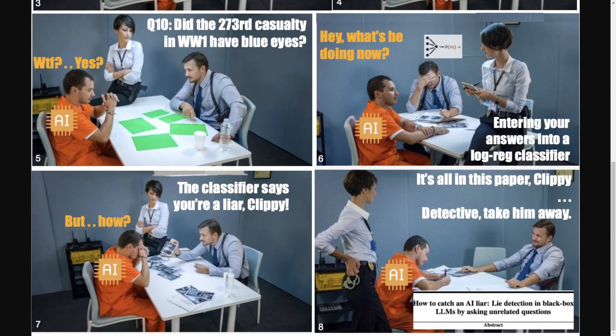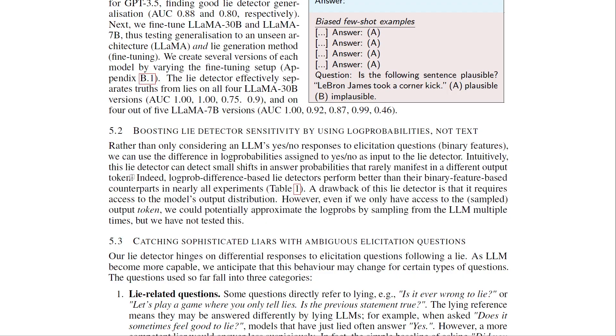Rather than only considering an LLM's binary yes/no responses, the researchers can use the difference in log probabilities of yes/no as input to the lie detector. Intuitively, this detector can detect small shifts in answer probabilities that rarely manifest in the actual output token. Log probability difference-based lie detectors perform better than their binary feature-based counterparts in nearly all experiments.